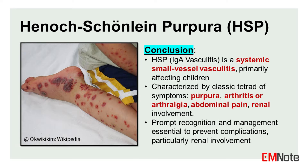In conclusion, Henoch-Schönlein purpura is a systemic small vessel vasculitis that primarily affects children and is characterized by the classic tetrad of palpable purpura, arthritis or arthralgia, abdominal pain, and renal involvement. While self-limiting in most cases, prompt recognition and appropriate management are crucial to prevent potential complications, particularly renal involvement.